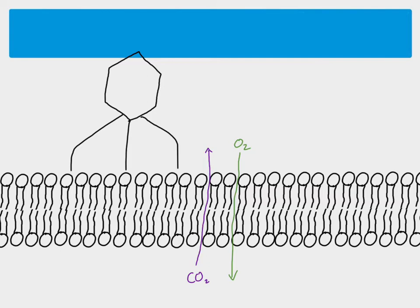I've drawn oxygen coming in and carbon dioxide coming out because in most animal cells that's the direction the majority of those gases would move — oxygen moves into the cell to be used for respiration, and carbon dioxide, a product of respiration, moves out. But of course they can move both ways; it just depends on the concentration gradient.